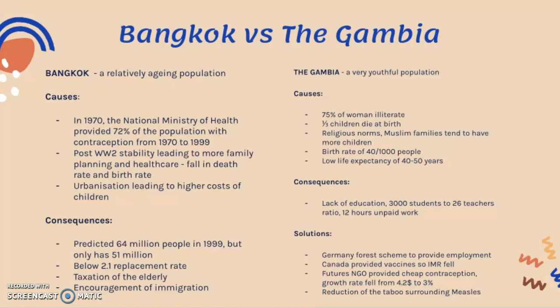Bangkok has a relatively aging population, and this has been caused because from 1970 onwards there has been a huge decline in birth rates as well as death rates. However, the decline in birth rates has contributed to a population which resembles an aging population. In 1970, the national ministry of health